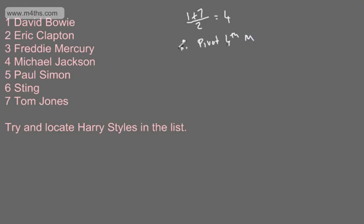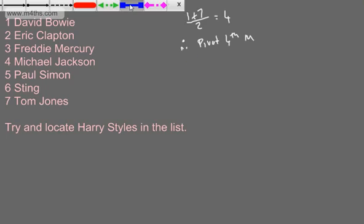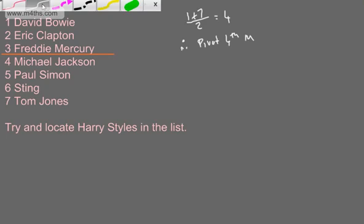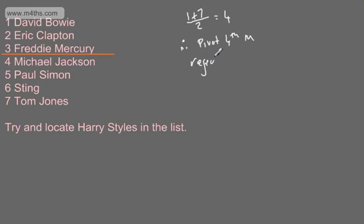We've got here seven names. So quite clearly our first pivot is Michael Jackson, but we just need to show that. 1 plus 7 divided by 2 gives me 4. Therefore my pivot is the 4th term, and the pivot is Michael Jackson.